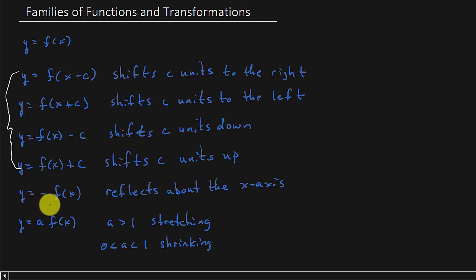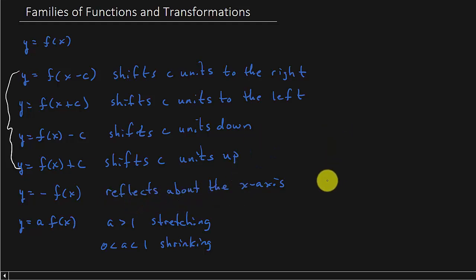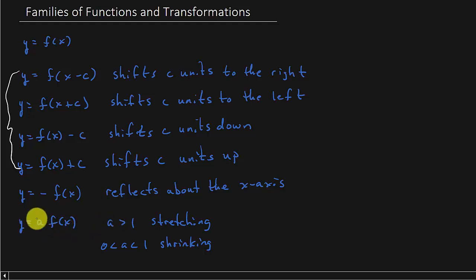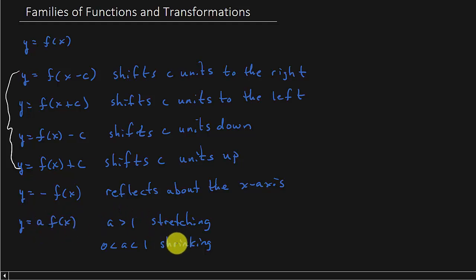Then we have y equals negative f of x. That reflects the graph about the x-axis, so it just flips it down. And then we have y equals a times f of x. If that number is larger than one, it's going to stretch the graph. And if it's between zero and one, it's going to shrink the graph.